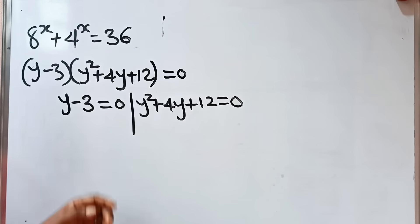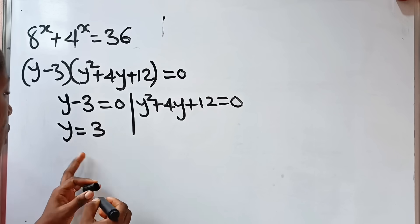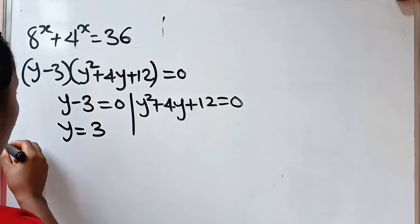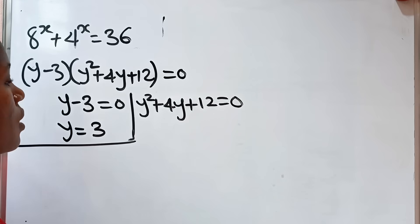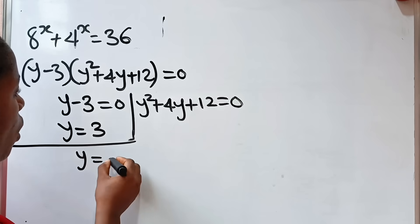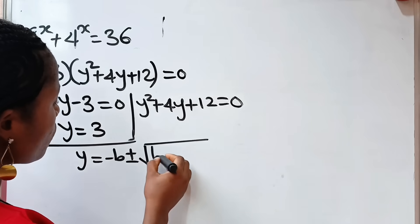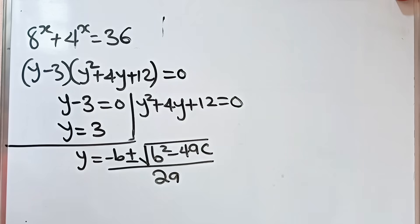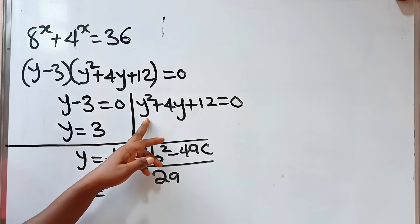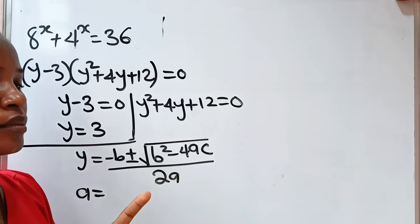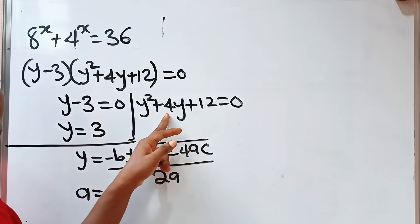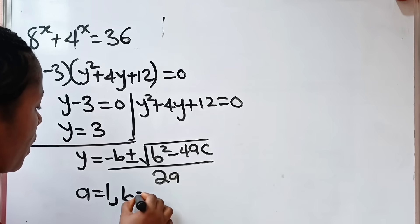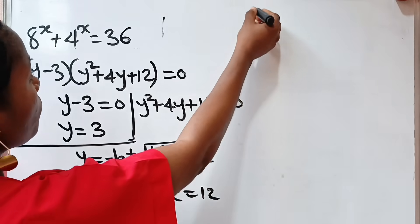From the first factor, we can say that y is equal to 3. We are going to come back to this to solve for x. From the second factor, we can solve using the quadratic formula: y equals minus b plus or minus square root of b squared minus 4ac, all divided by 2a. Our a is the coefficient of y squared, which is 1. Our b is the coefficient of y, which is 4. Our c is the constant, which is 12.